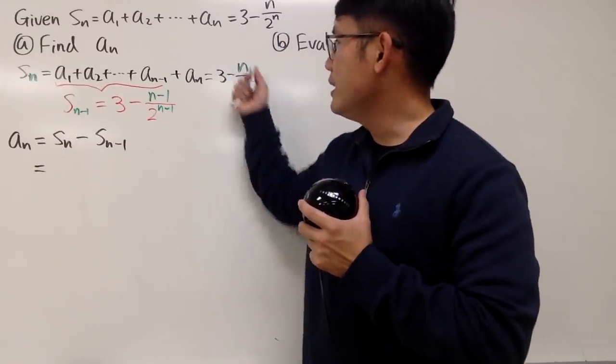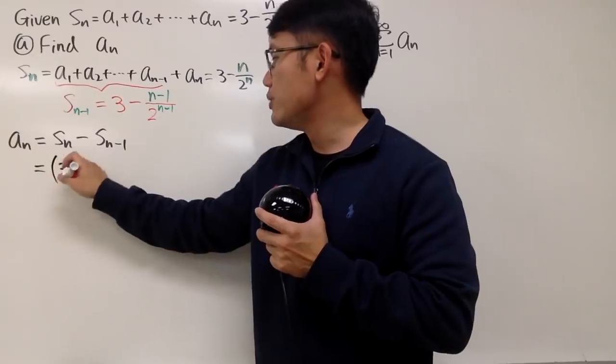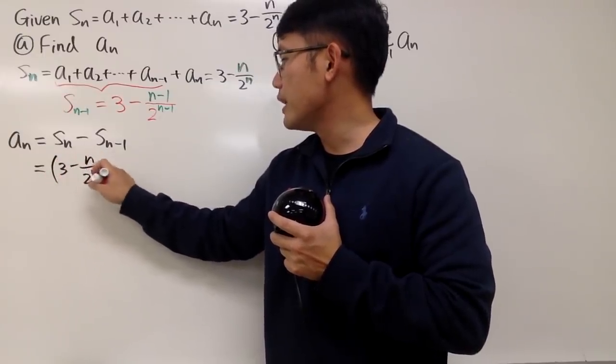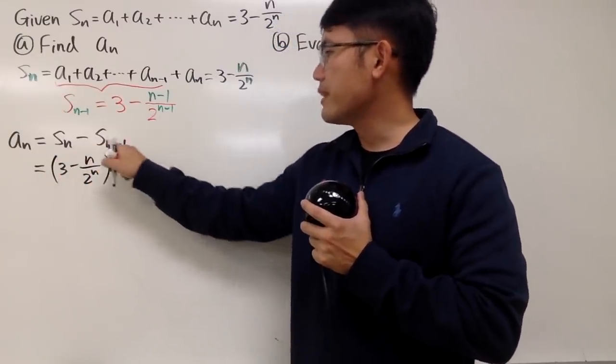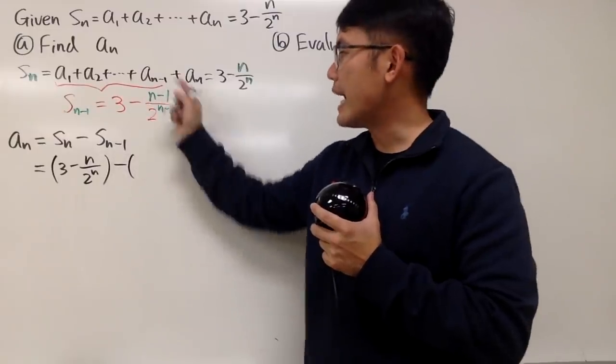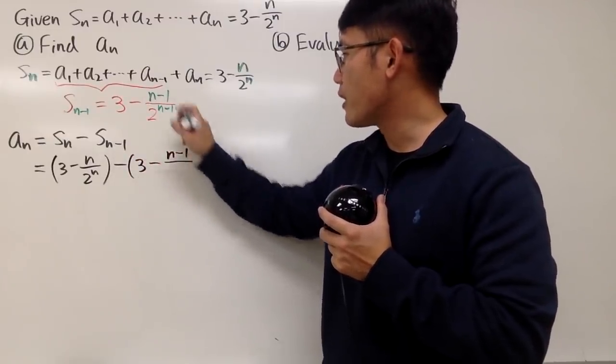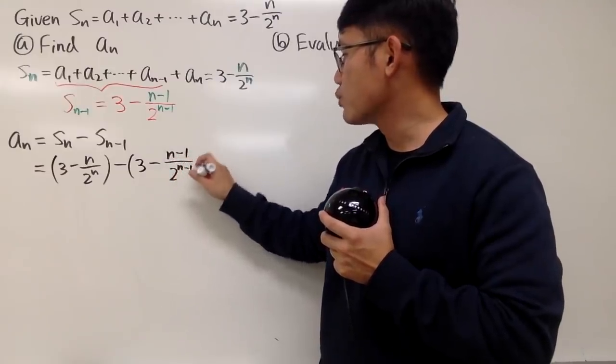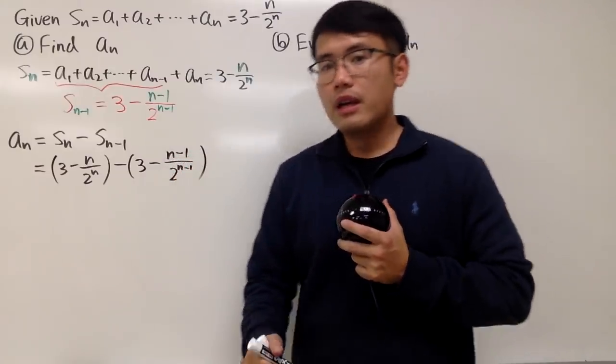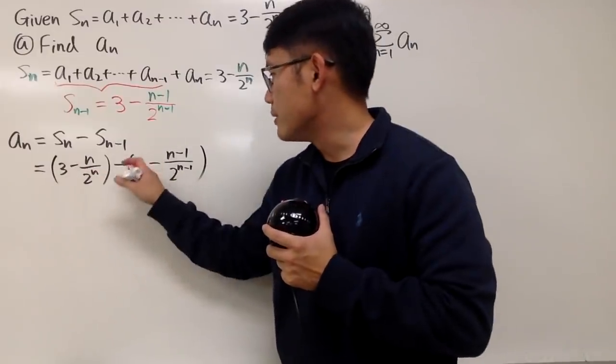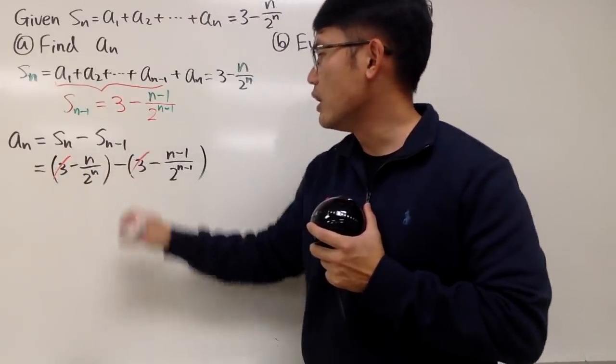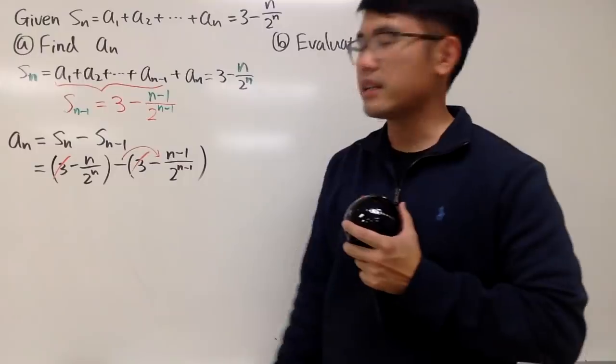The n's partial sum minus the $n-1$'s partial sum, like this. And now we can just write down the formulas and then we can just do the algebra from here. $S_n$ is equal to this, which is $3 - n/2^n$, and then minus $S_{n-1}$ is all that. So we have $3 - (n-1)/2^{n-1}$, like this.